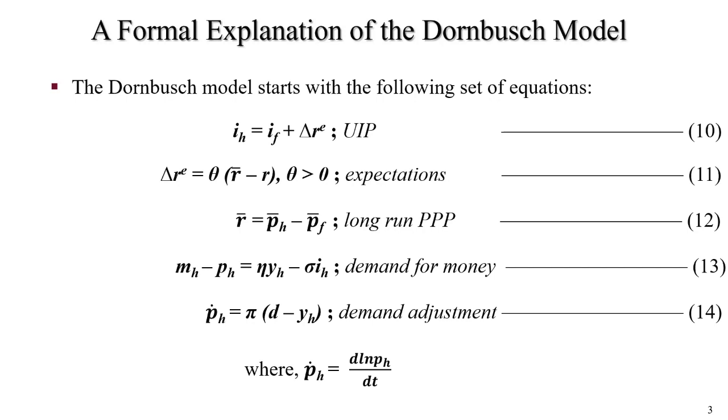Next equation, equation 11 denotes the expected rate of depreciation of a currency is determined by the speed of adjustment parameter and the gap between the spot exchange rate and its long-run equilibrium value. Delta RE equals theta times R bar minus R, where theta is greater than 0. Here, R equals the spot exchange rate, R bar equals long-run equilibrium value of R, and theta equals adjustment parameter.